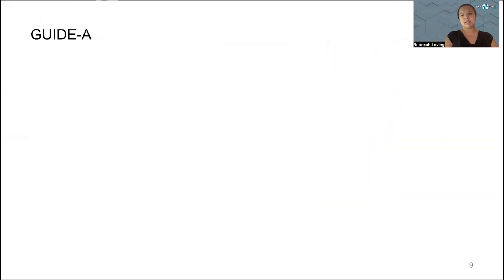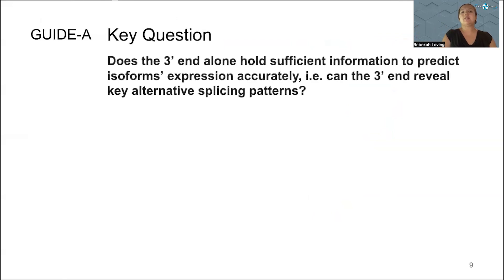One of the key questions I wanted to answer as I started my graduate work was: does the 3 prime end alone hold sufficient information to predict isoform expression accurately? Can the 3 prime end reveal key alternative splicing patterns? Because the 3 prime end is what we often get in short read methods, but it doesn't necessarily contain all the alternative splicing pattern information that's important, since we know different isoforms actually have different functionality.